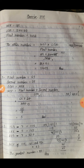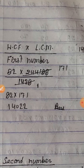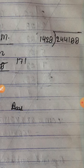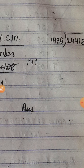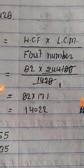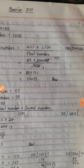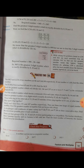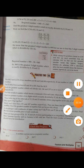पहले 2,44,188 को 1428 से divide करते हैं। Solution आपके सामने screen पर है। Divide करने पर आता है 171। फिर 82 × 171 = 14,022। यही हमारा second number है — answer of question number 1 is 14,022.